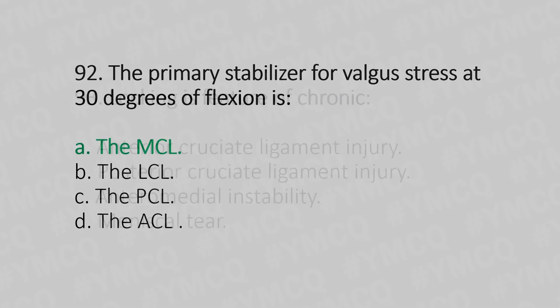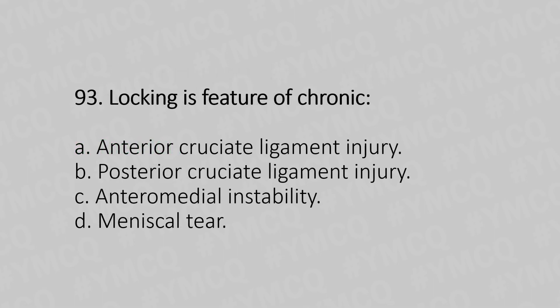Let's move to question number 93. Locking is a feature of chronic: Option A, anterior cruciate ligament injury. Option B, posterior cruciate ligament injury. Option C, anteromedial instability. Option D, meniscus tear. The answer is Option D, meniscus tear.